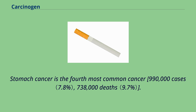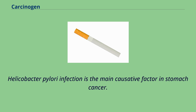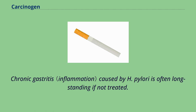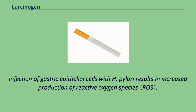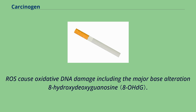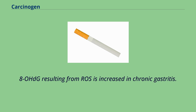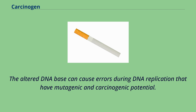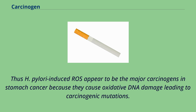Helicobacter pylori infection is the main causative factor in stomach cancer. Chronic gastritis caused by H. pylori is often long-standing if not treated. Infection of gastric epithelial cells with H. pylori results in increased production of reactive oxygen species. ROS cause oxidative DNA damage including the major base alteration 8-hydroxydeoxyguanosine. This altered DNA base can cause errors during DNA replication with mutagenic and carcinogenic potential, making H. pylori-induced ROS the major carcinogens in stomach cancer.